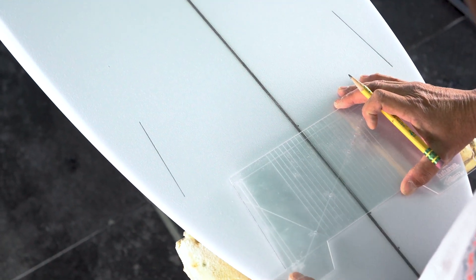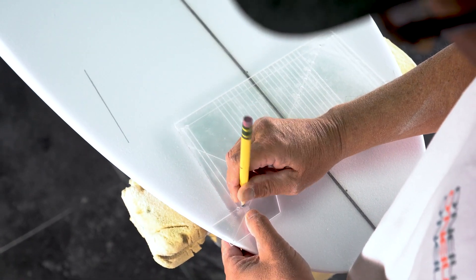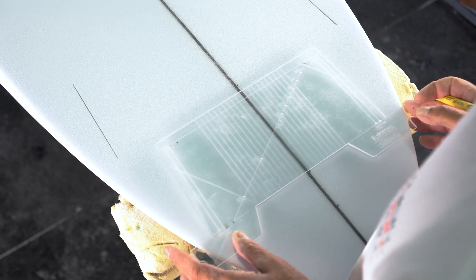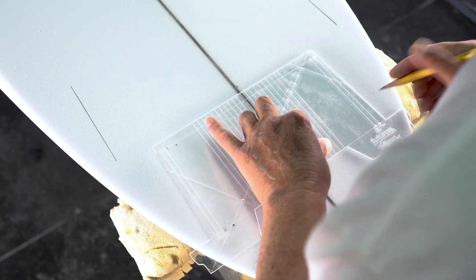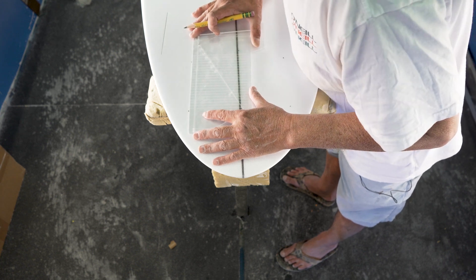Line it up with the stringer. Then, I'm going to go to my quad setting which is in there. Slide it over. If you want to add a line.